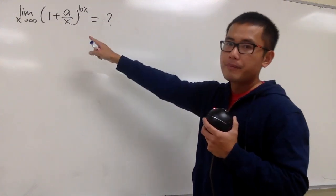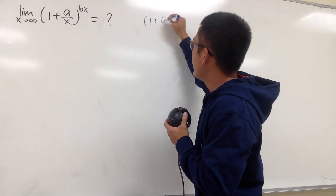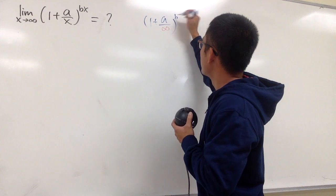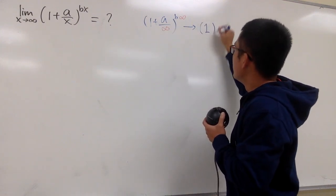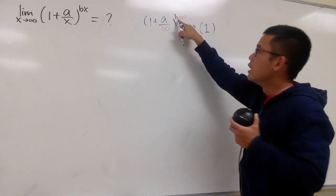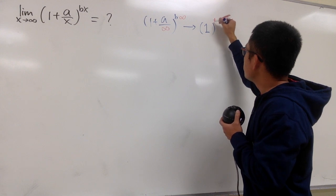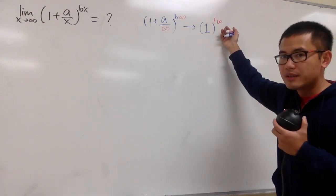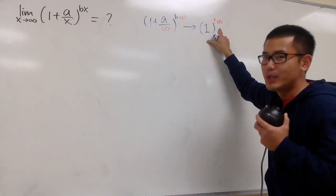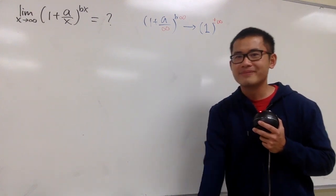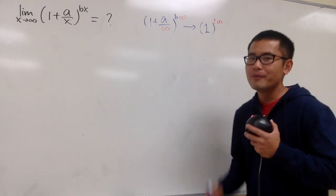First step: plug in infinity into x and see what we get. We have 1 plus a over infinity, raised to b times infinity. Now, a over infinity is just 0, so we get 1 inside. And b times infinity is infinity — or negative infinity if b is negative. Either way, we have 1 to the power of infinity, which is an indeterminate form. We cannot draw any conclusion and cannot say the answer is 1.